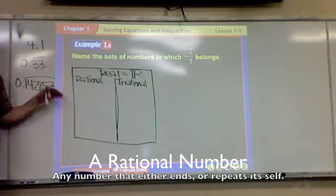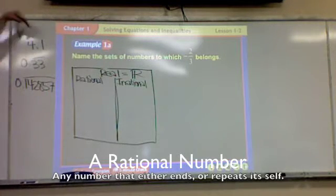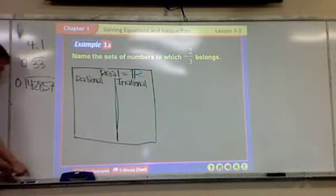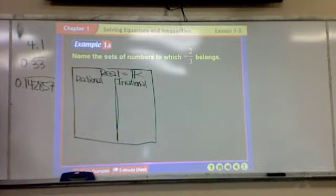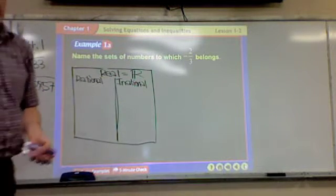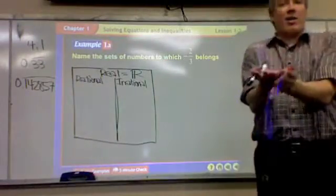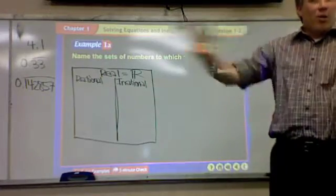Every rational number, if you write it as a decimal, will either stop or repeat itself. That's the simplest definition. But that's not the official definition. The official definition is every rational number can be written as a fraction where there are no decimals.